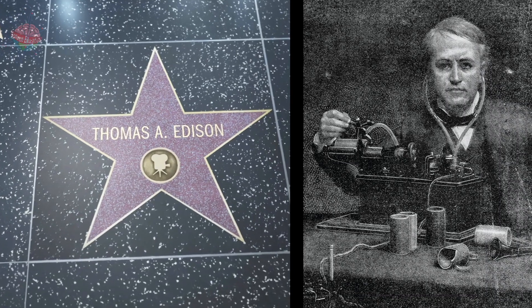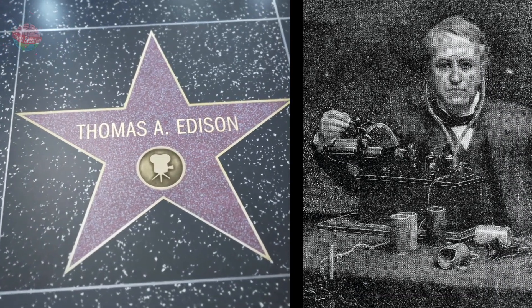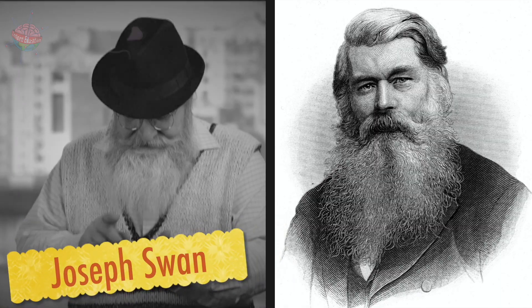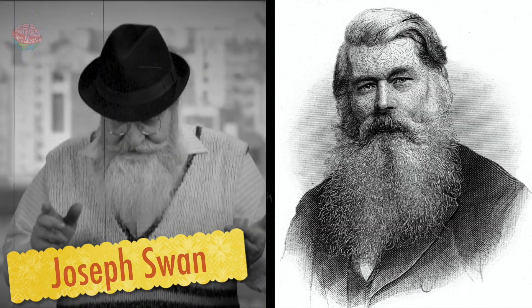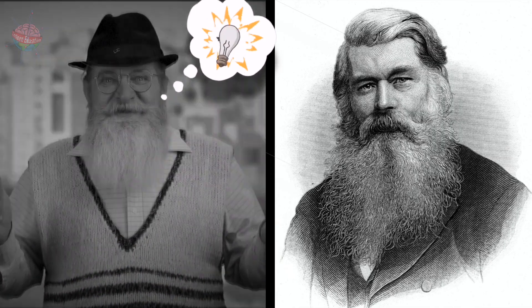Today, lots of people give the American inventor Thomas Edison all the credit for inventing the incandescent lightbulb. However, an English inventor called Joseph Swan independently came up with the same invention in the same year.